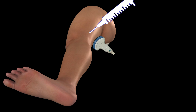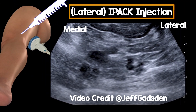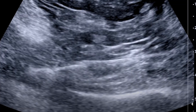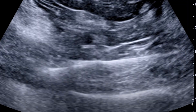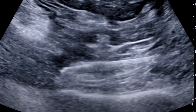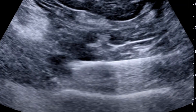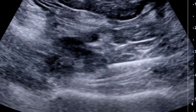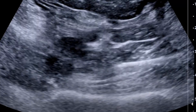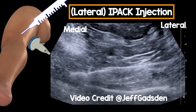In this video from Jeff Gadsden, you can see local anaesthetic being deposited as the needle is inserted through to the medial aspect of the knee. As the needle is withdrawn, local anaesthetic fills the space in the posterior capsule of the knee.